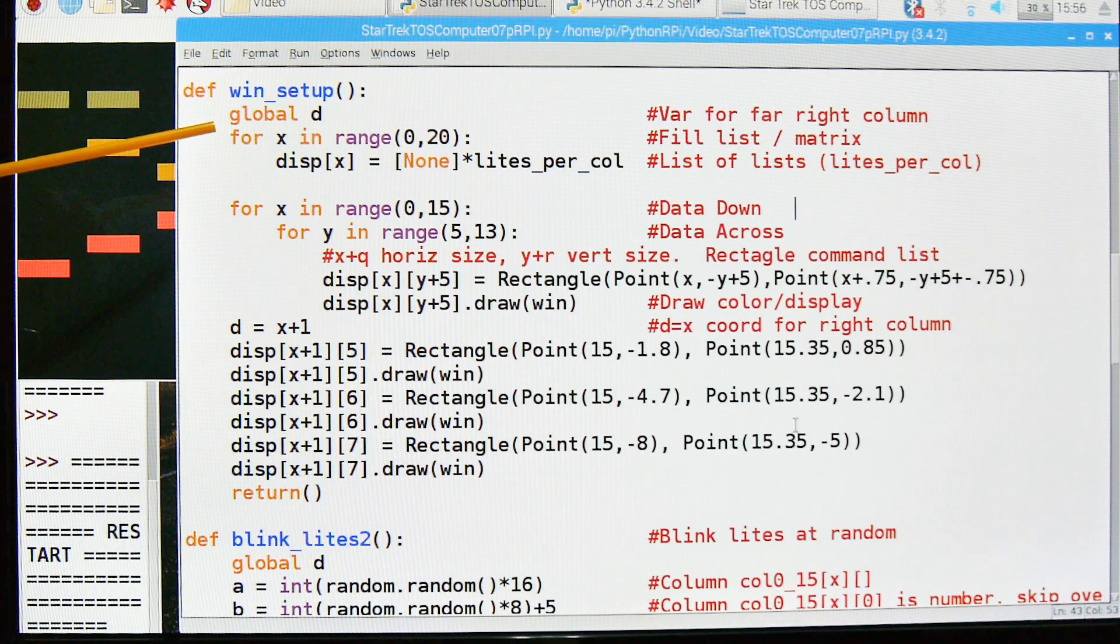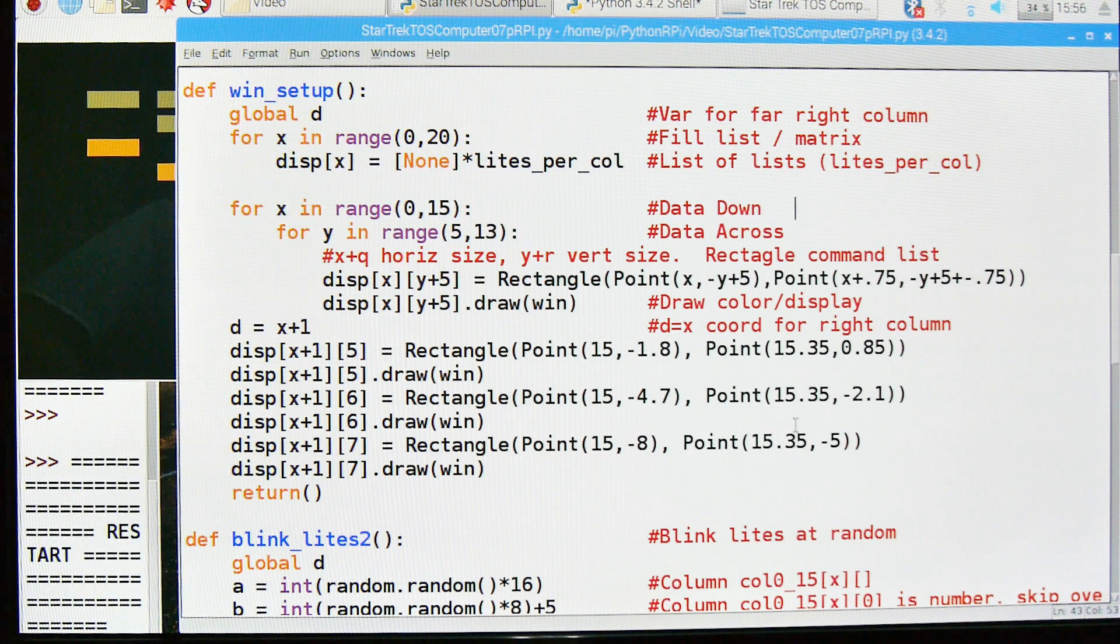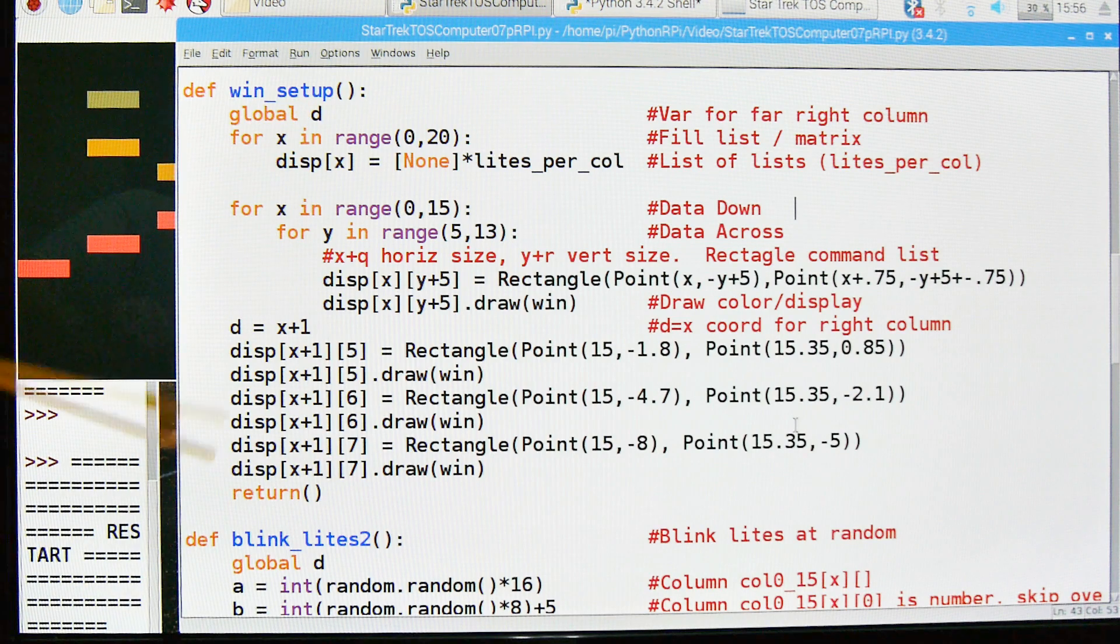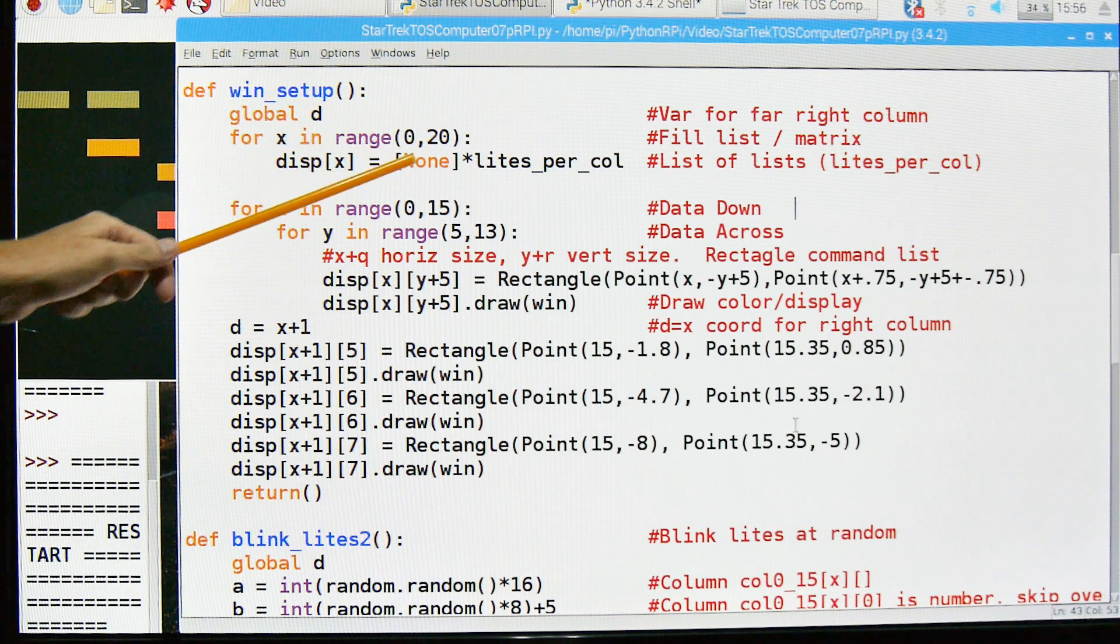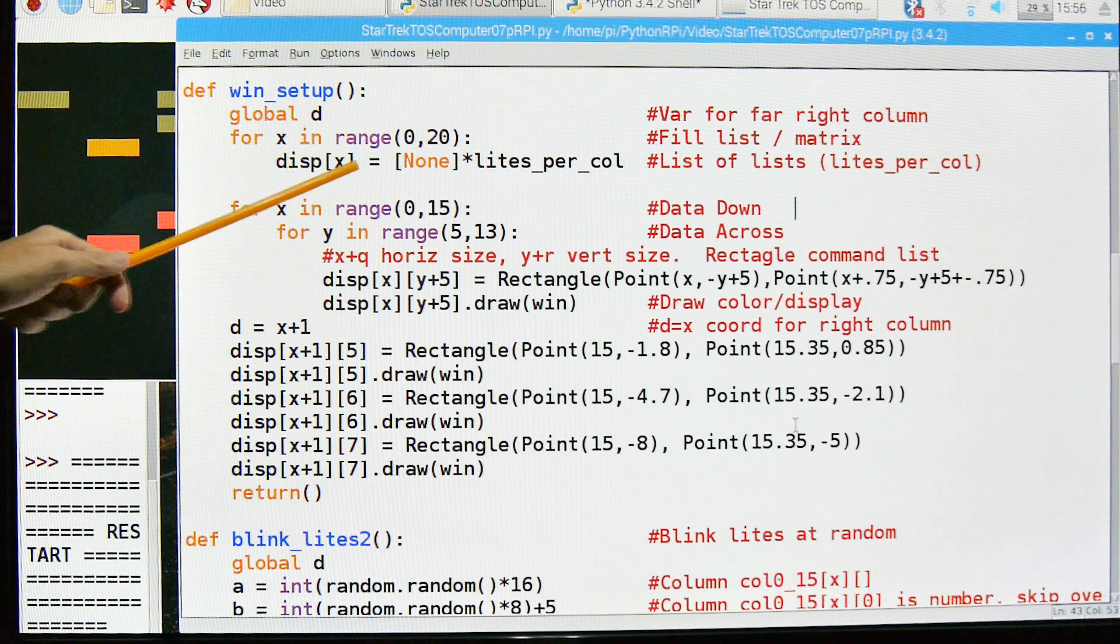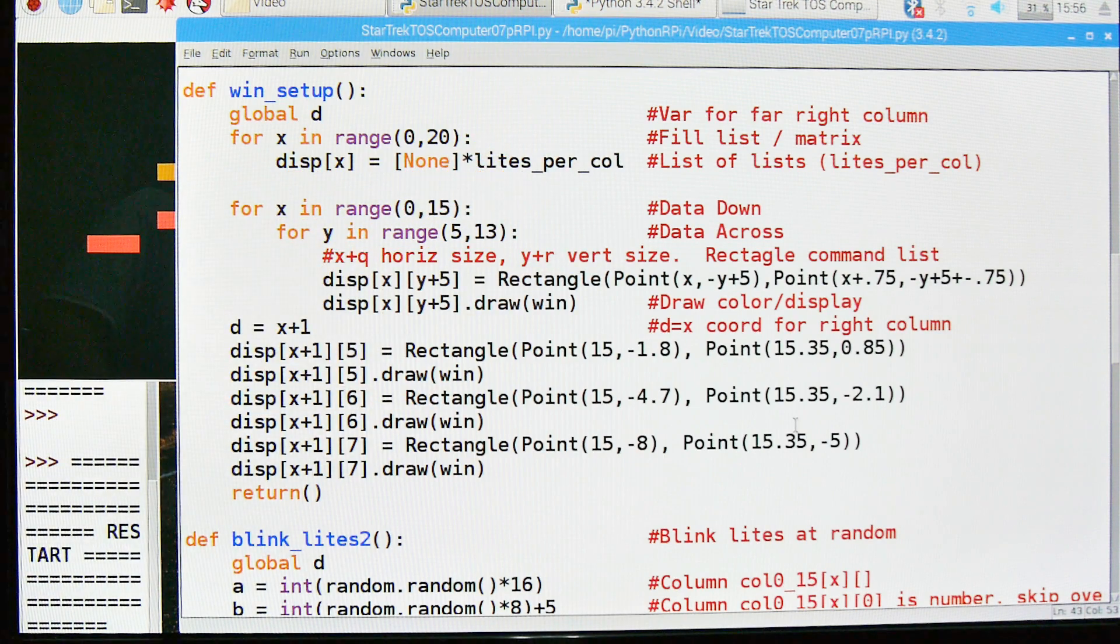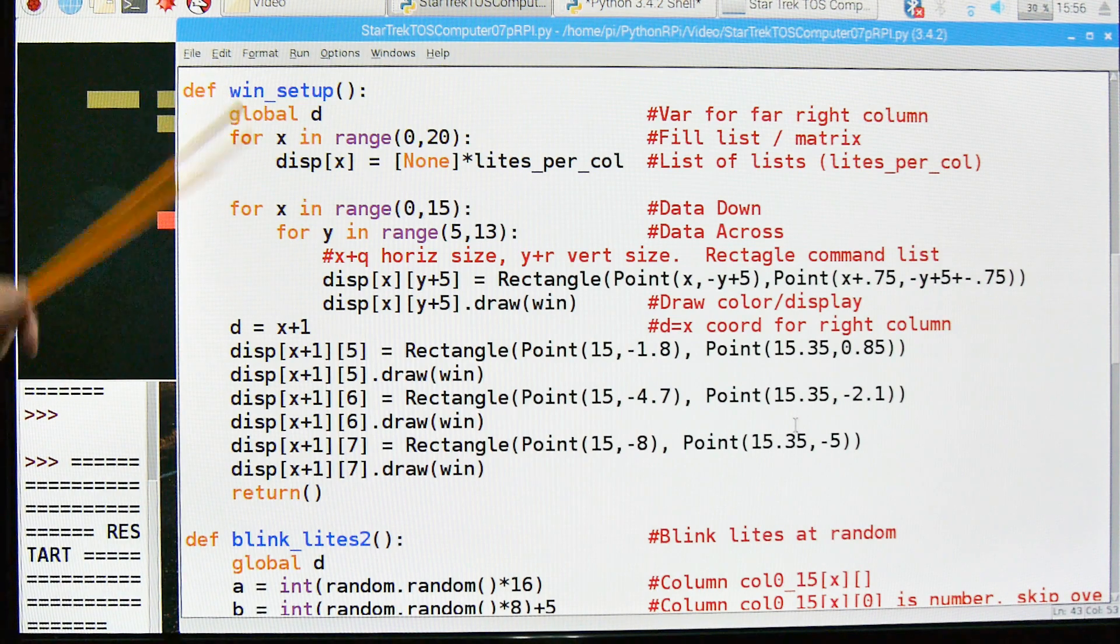Our first subroutine, our first function if you will, is just to set up the window. And we start out with a global variable and this is the variable for the far right column. The far right column has a lot of exceptions to it and it was a real headache to get that right. But this is one of the things that we had to do to get that. And then the next thing is we're just going to create the display list. And we're going to fill it with none.